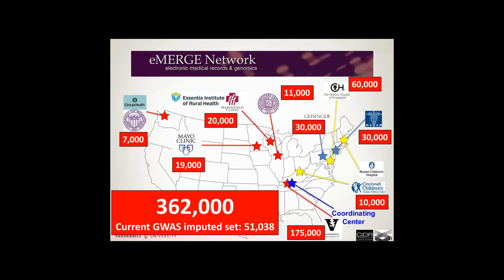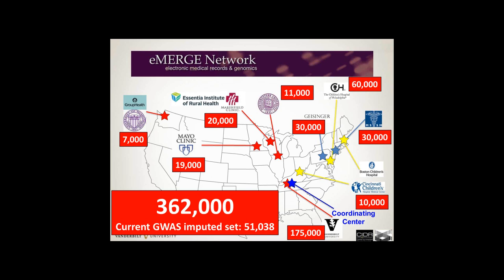This is my version of a slide that Rex showed. I updated it after Erwin said the numbers were a little bit wrong. The current number I see is 362,000, and the computed data set for GWAS is 50,000, and may go as high as a couple of tens of thousands more - so 70,000, 80,000, 90,000.